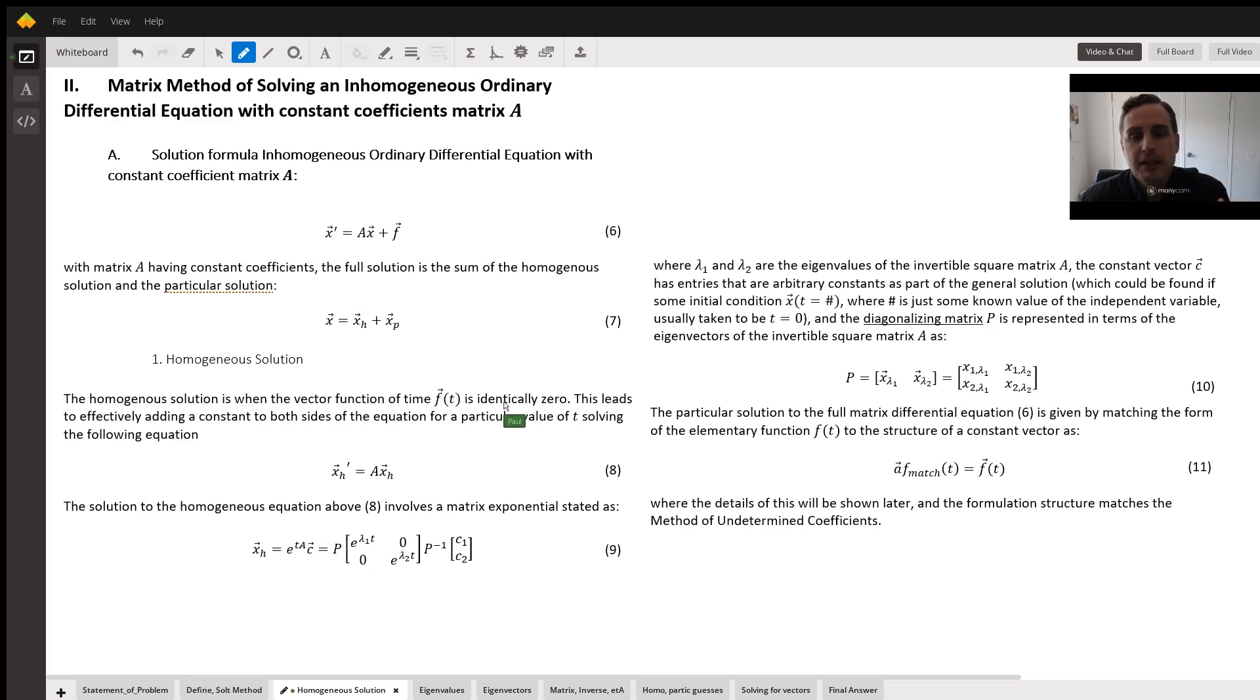First we must get the homogeneous solution. The homogeneous solution is termed x subscript h here, vector. The homogeneous solution assumes that f vector is exactly zero, so we're just solving x prime equals Ax. Again, remember here x is a vector, and this particular x is the homogeneous. In other words, if you added zero to both sides of the equation, this is a homogeneous solution and it wouldn't really matter what f is. So we have to consider the homogeneous solution first.